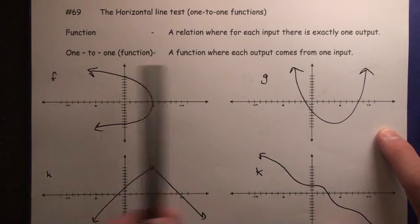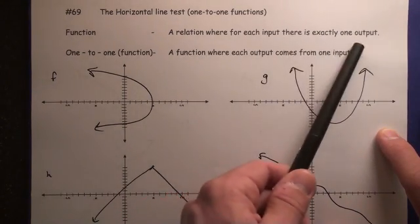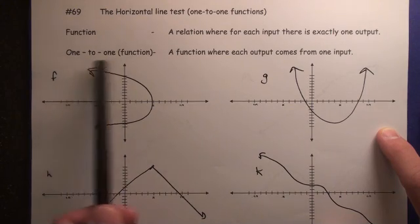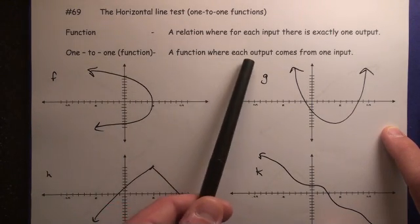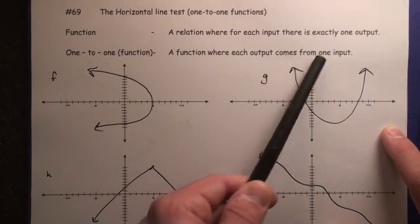Just a review, a function is a relation where for each input there's exactly one output, and a one-to-one function is a function where each output comes from one input.